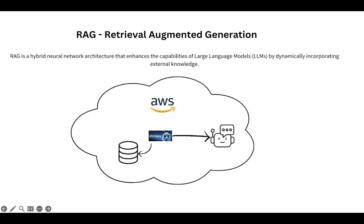Let's start with RAG. By definition, RAG is a hybrid neural network architecture that enhances the capabilities of LLMs by dynamically incorporating external knowledge. This term RAG might seem a bit complicated, but the concept is quite simple. In simple words, implementing RAG — or grounding, as it's also known — in your LLM basically means you're bounding your LLM to the information provided in your database or data store, and nothing outside of that. By database, I don't mean a relational database or a NoSQL database; I'll get to what I mean by database shortly.